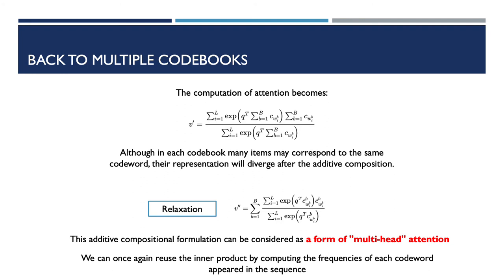Now, let's go back to the case where multiple code books are used to compress the item embedding. In this case, each item in the input sequences is represented by an additive composition of the code words in all code books. So, unlike the single code book scenario, although in each code book many items may correspond to the same code word, their representations will diverge after the additive composition. Hence, we still have to compute the inner product between the query and each of the items in the input sequences.